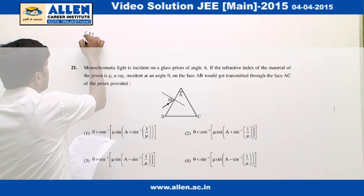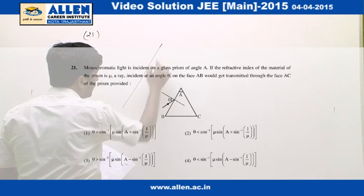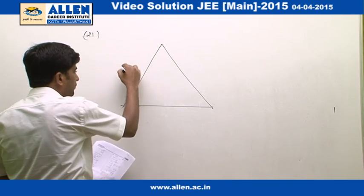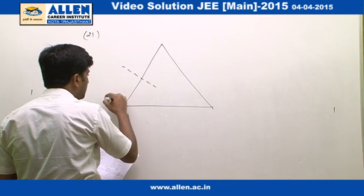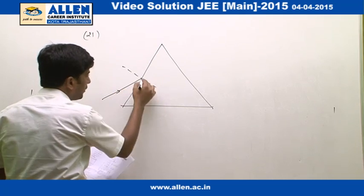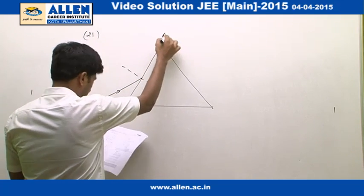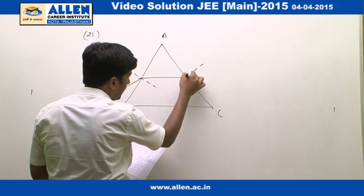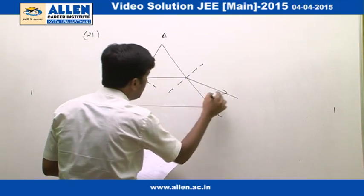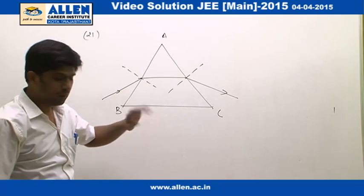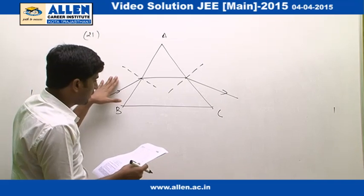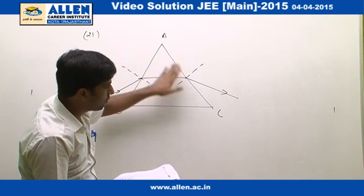In question number 21, let me draw the diagram first. A prism is given in which a ray strikes at the face AB and again it strikes at the face AC, then it emerges from the face AC. Now in the question, the range of theta is asked for the transmission of ray from the face AC.